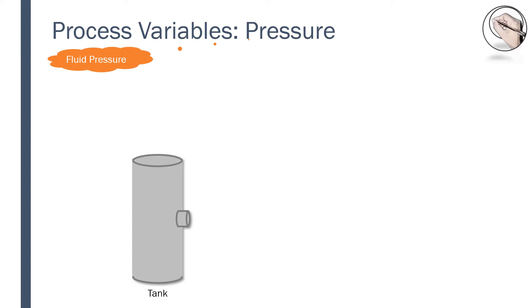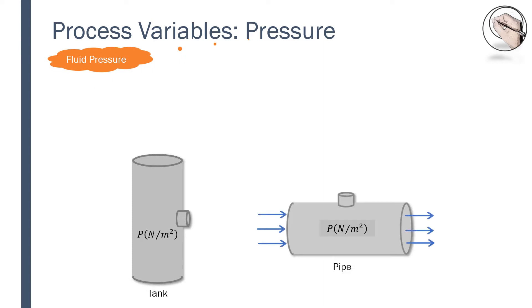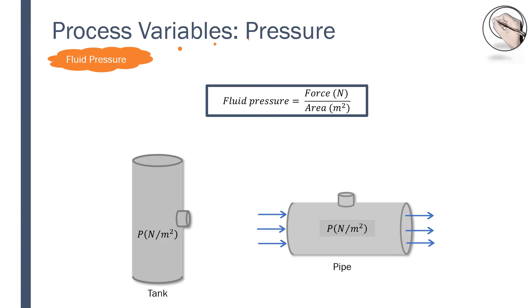Given a tank containing water and a pipe with water flowing through it, if each had an opening, then the fluid pressure would be defined as force over area, where force is the minimum force that would have to be exerted on a frictionless plug in the hole to keep the fluid from emerging from that area. In simple terms, for this force to contain the fluid, it has to be equal to the force of the fluid in magnitude, but in the opposite or countering direction.